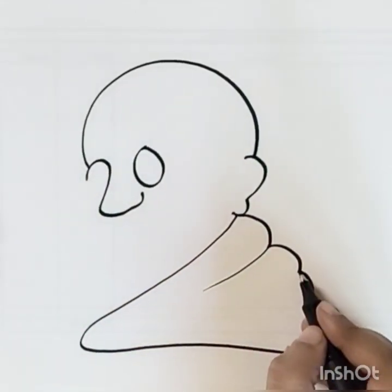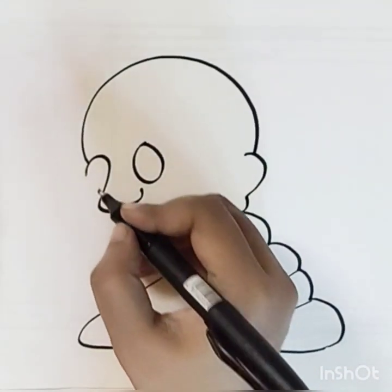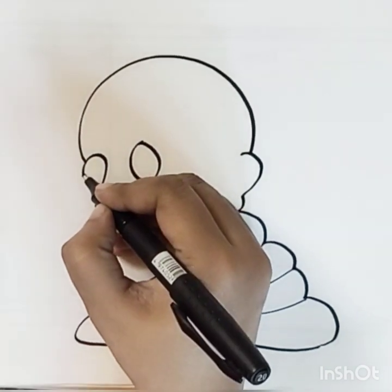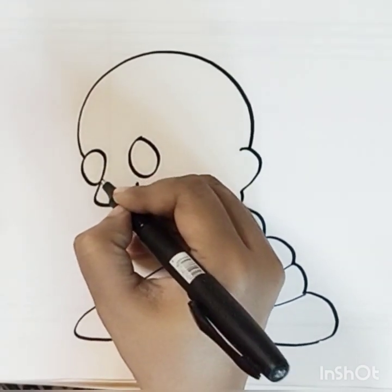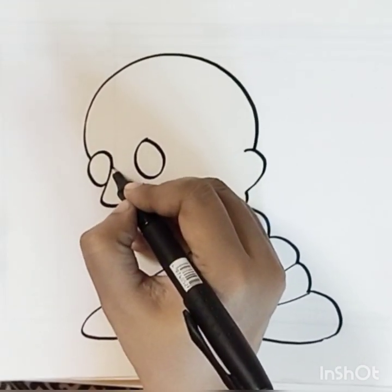Now we will make his cloth with this. Now the spectacles — we will make them round and we will join them.